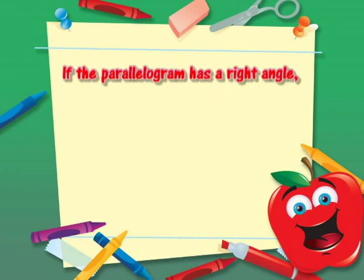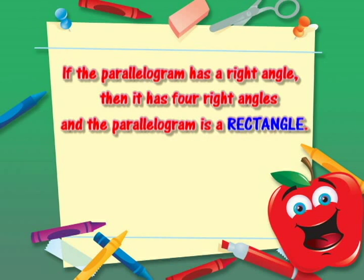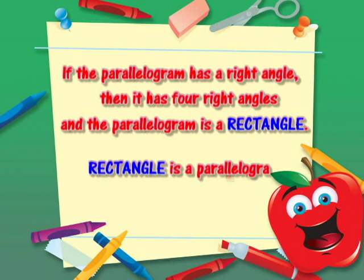If the Parallelogram has a Right Angle, then it has four Right Angles, and the Parallelogram is a Rectangle. Rectangle is a Parallelogram. And that's the first thing to be considered on Rectangle.